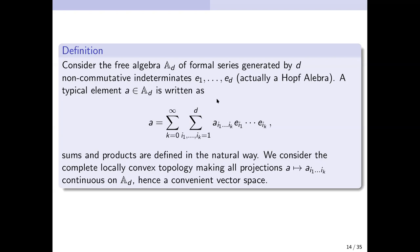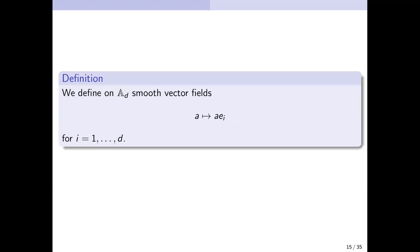It is actually a Hopf algebra, which I will return to in a few minutes. I mention it because I am in the building where Heinz Hopf worked many years ago as a member of the math department at ETH. In this algebra, the vector fields correspond to right multiplication by the generators — D vector fields in total. If I take an element A of the algebra and multiply from the right by one of the indeterminants, this gives a linear vector field on the algebra.